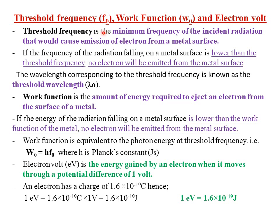For example, if the threshold frequency of a certain metal surface is 20 Hz, then the incident radiation must have a frequency either equal to 20 Hz or more than 20 Hz in order to cause emission of electrons from that metal surface. Otherwise, if the frequency of the incident radiation is lower than 20 Hz, no photoelectric emission is going to take place.